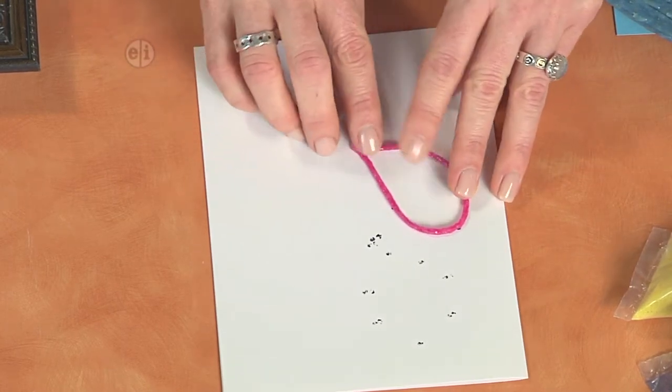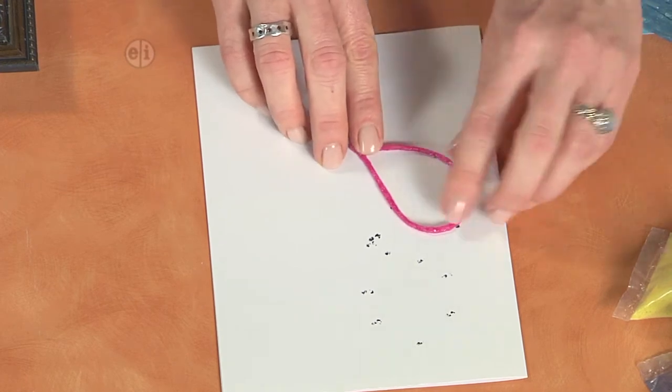Of course, you could draw your own picture, spell your name, or maybe put the number of the age that the person is turning to create your pattern.